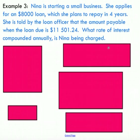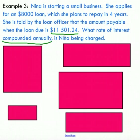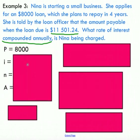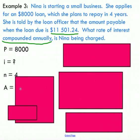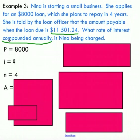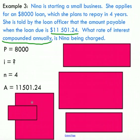One final example — solving for the rate of interest instead of the total amount. A person takes out an $8,000 loan to start a small business, repaying it in four years. The amount payable when the loan is due is $11,501.24. We're asked what rate of interest, compounded annually, is she being charged. We know P equals $8,000, N equals 4 (compounded annually), and A equals $11,501.24. Our unknown is the interest rate i.